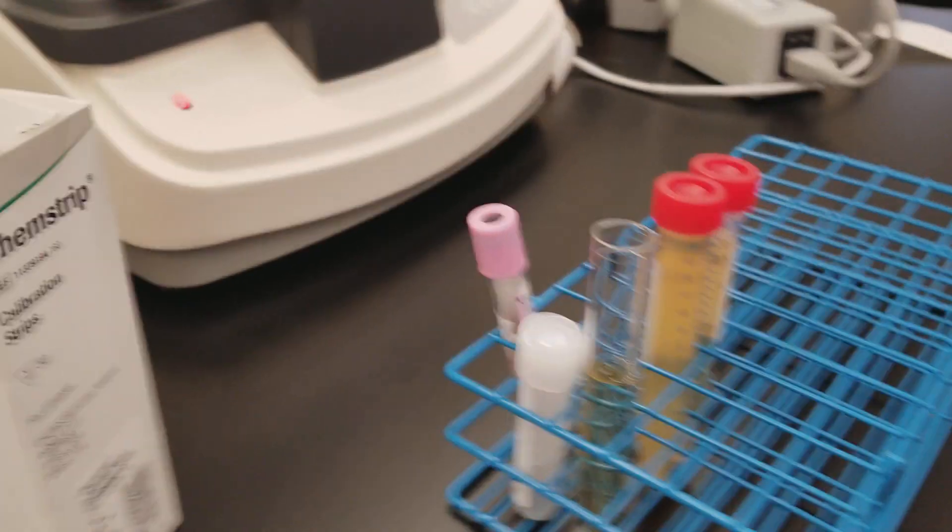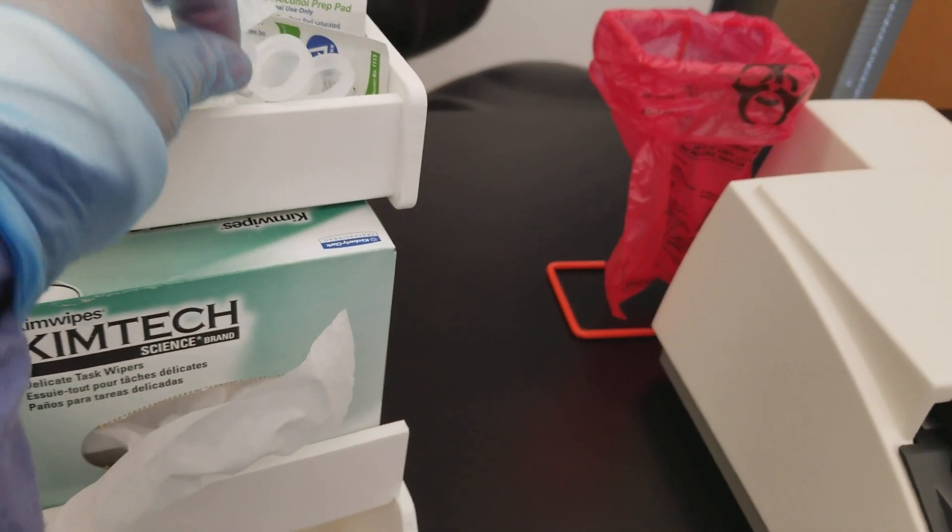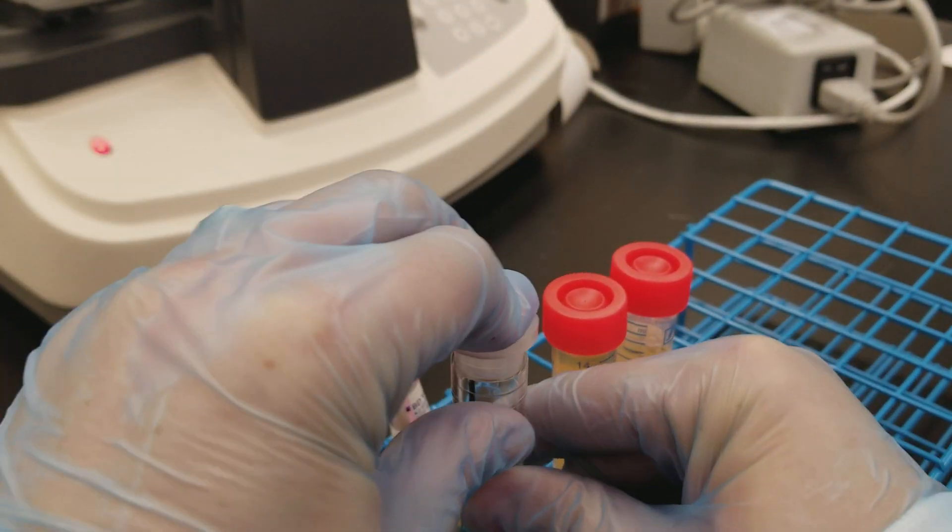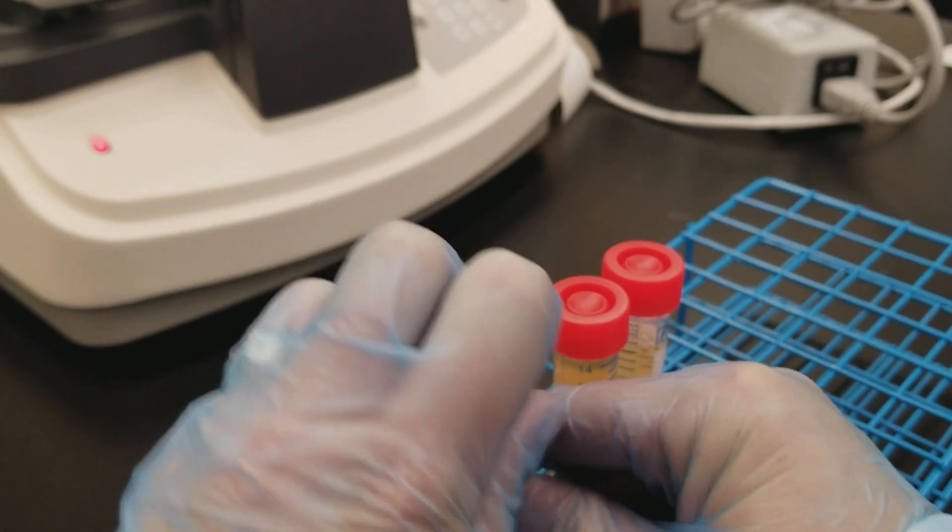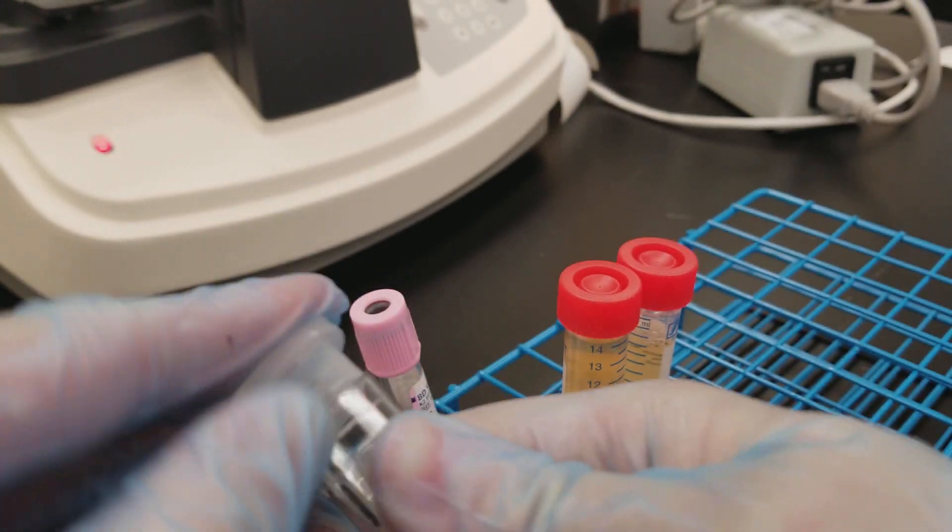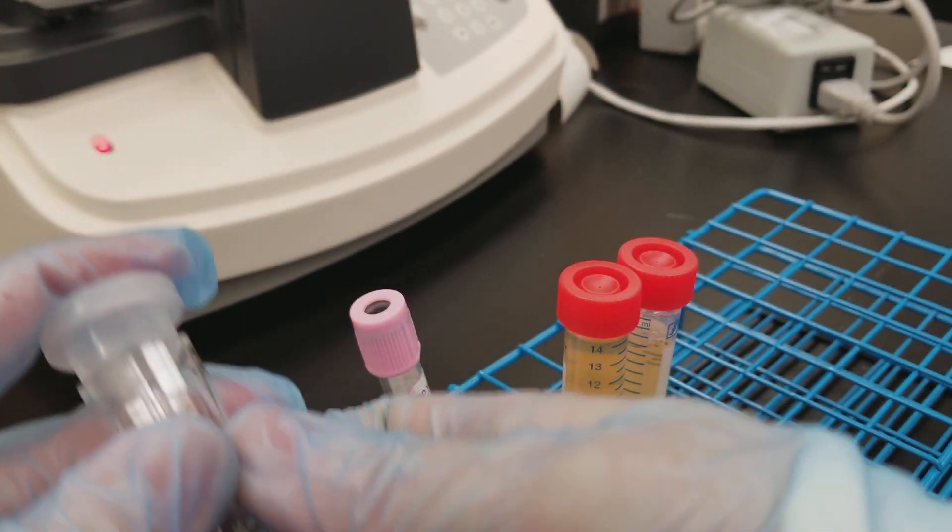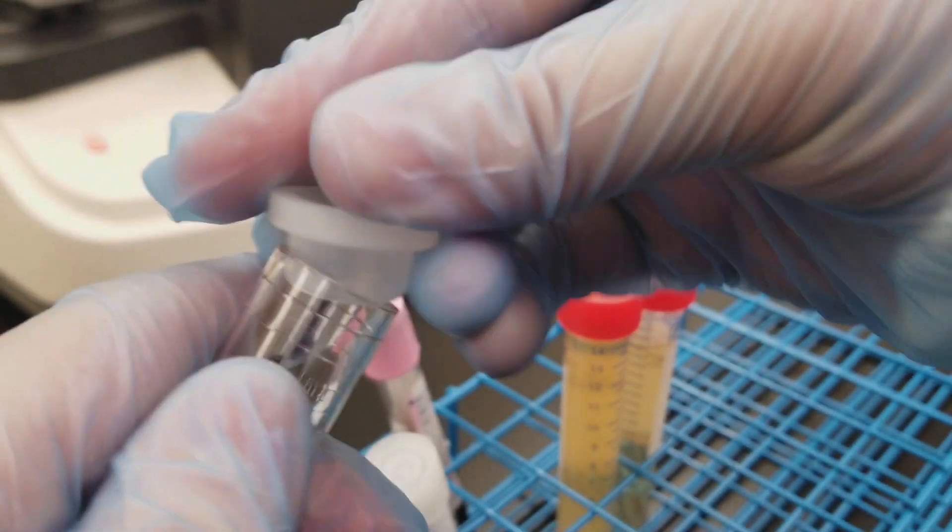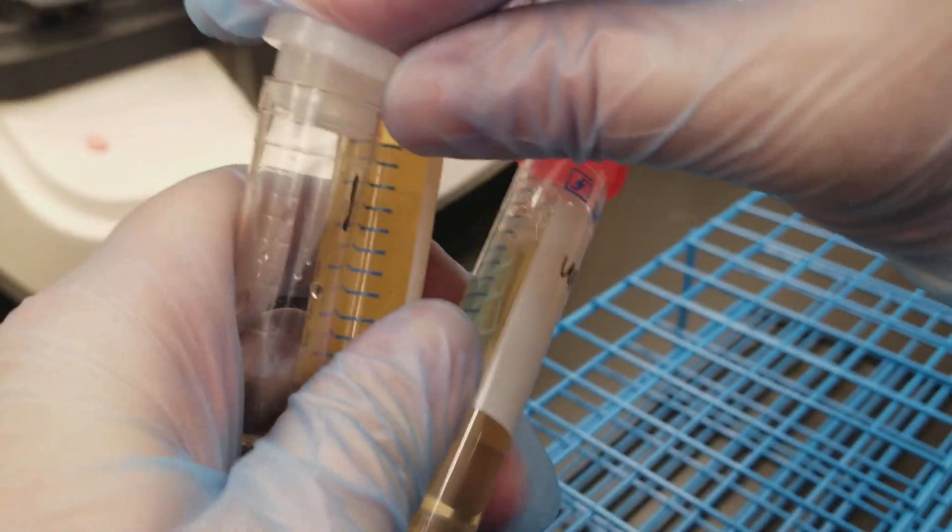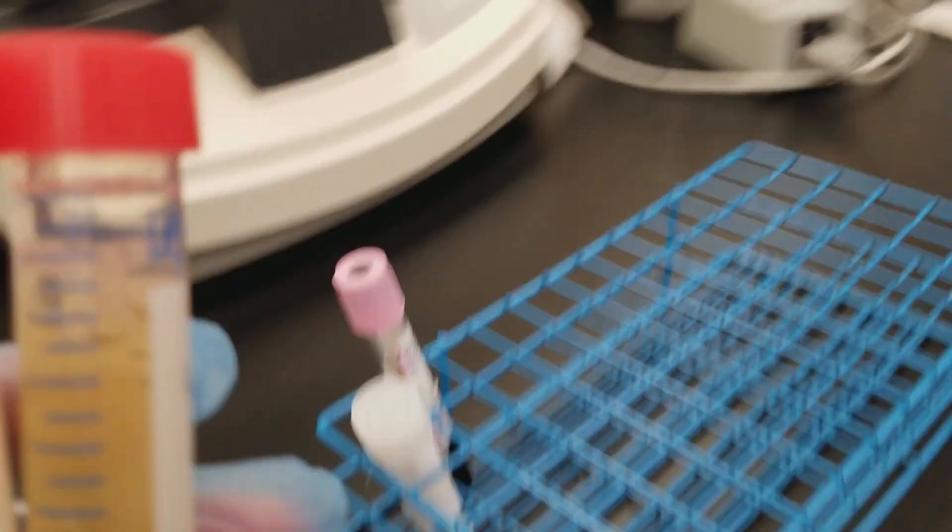All right, so I'm going to get a cap. Hopefully that's going to sit nicely in this guy. Sometimes these caps don't work really well. You can also parafilm the top of the tube if you need to. Oh, there we go. We got it. So we're going to put these guys in the centrifuge.